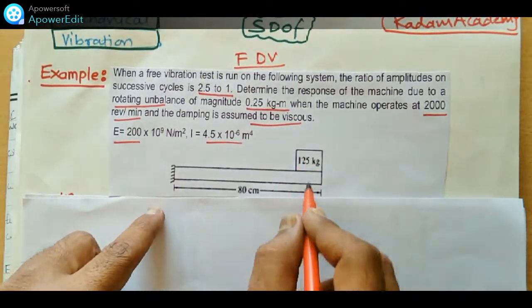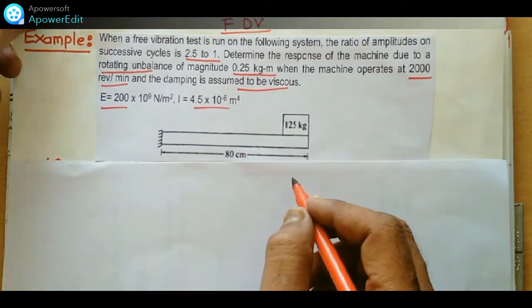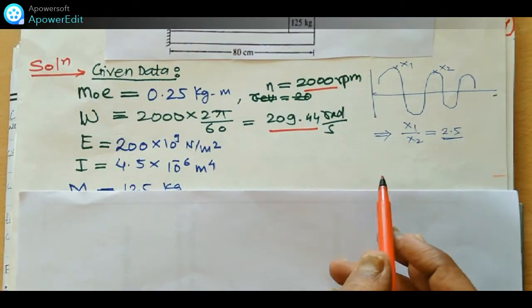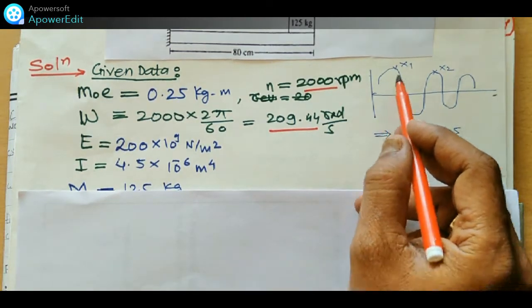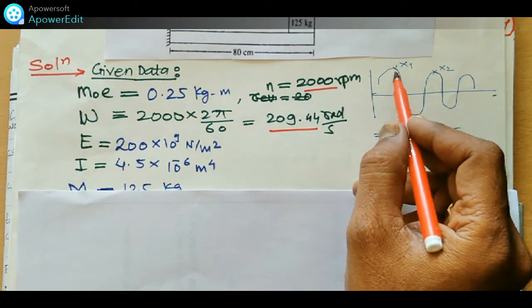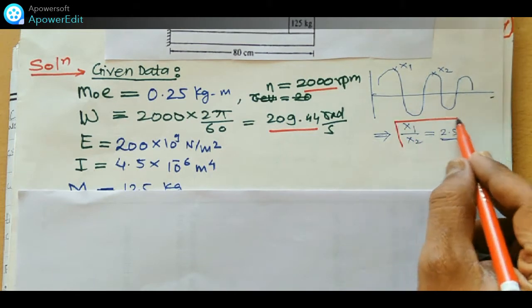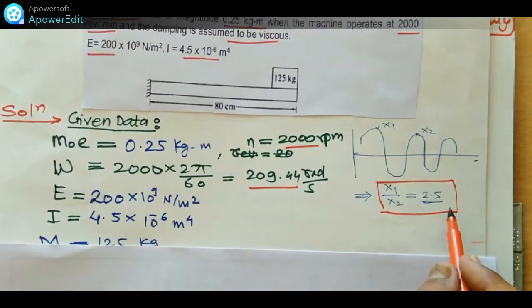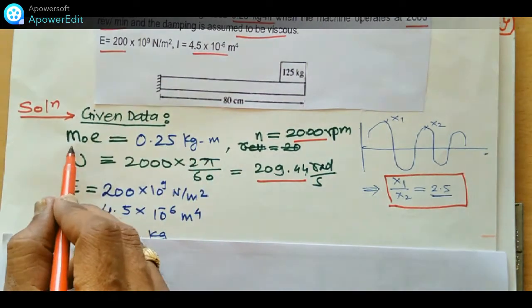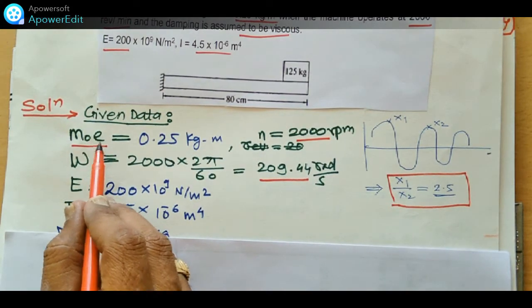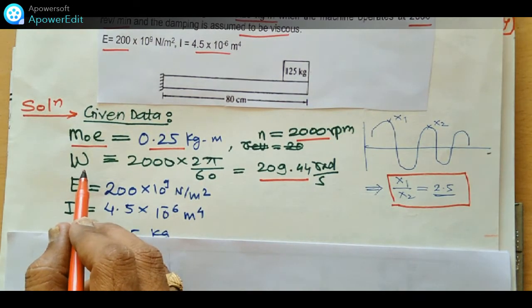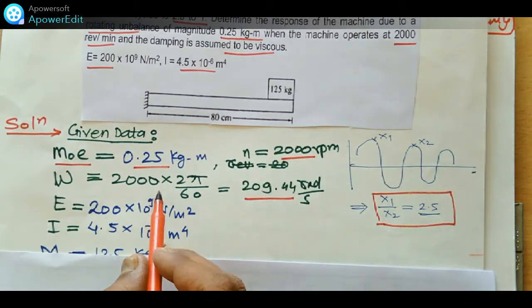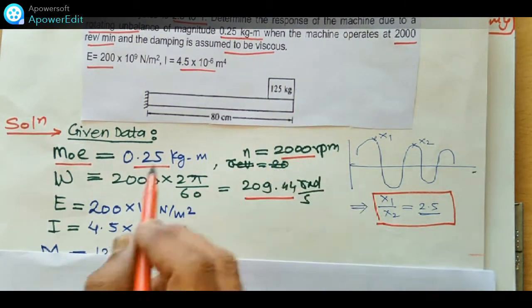The system involves transverse vibration due to load P and a rotating harmonic force. The amplitude ratio x₁/x₂ = 2.5 is given. The excitation frequency from 2000 rpm is calculated as: ω = 2000 × 2π/60 = 209.44 rad/s.